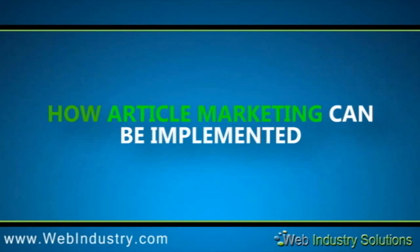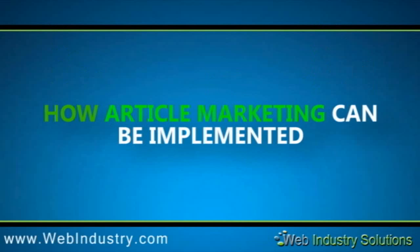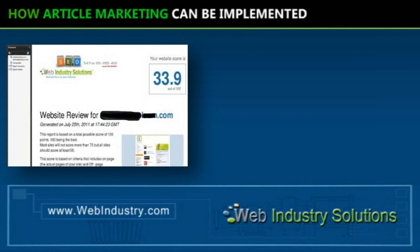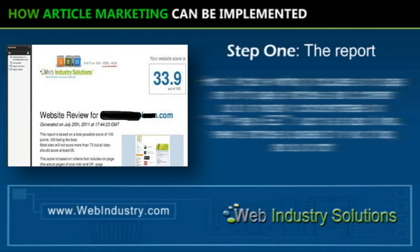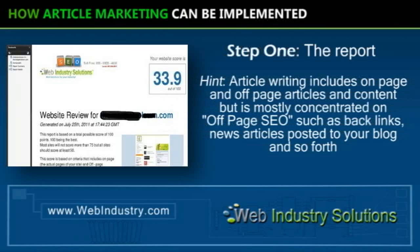Before article marketing can actually be implemented, we run a series of tests and protocols to set up the logic and direction based on some preliminary research. The first thing we do is create a report based on 100 criteria that combines your on-page and off-page SEO. That lets us know if we need to do a little bit of work on your website before we actually start doing article marketing.